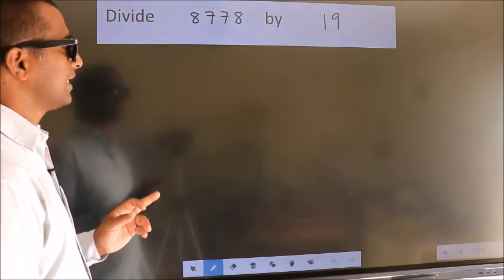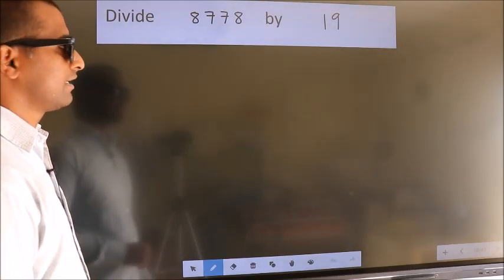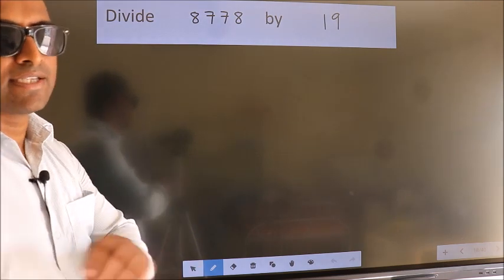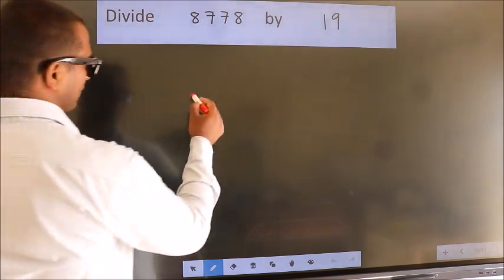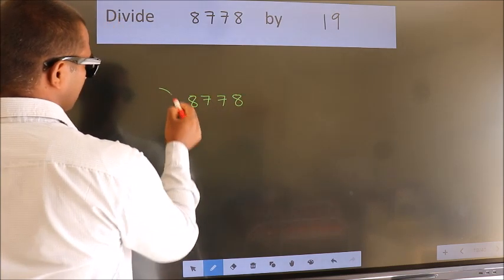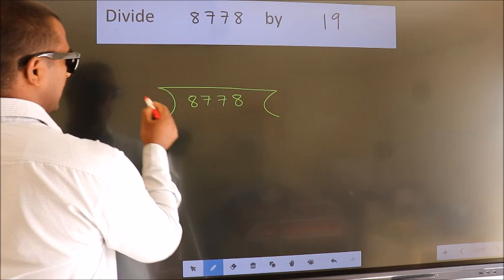Divide 8778 by 19. To do this division, we should frame it in this way: 8778 here, 19 here.